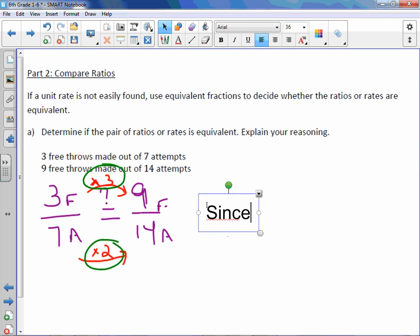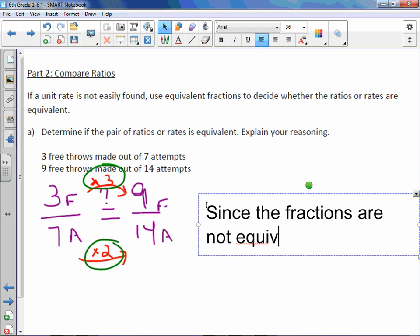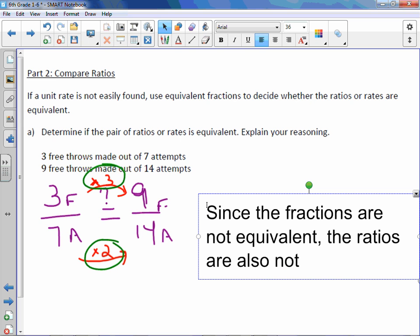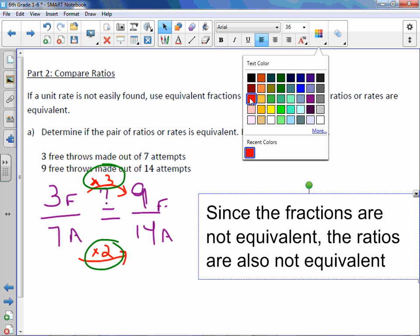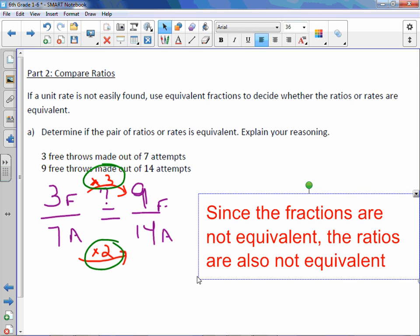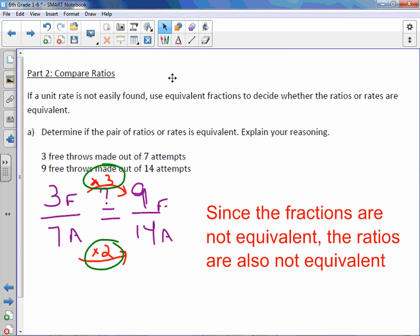Now because what you multiply is different, I know that these ratios cannot be equivalent. So since the fractions are not equivalent, the ratios are also not equivalent. And one more thing you should do, if something is not equal, you should put a slash through the equal sign to show not equal.